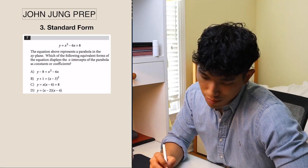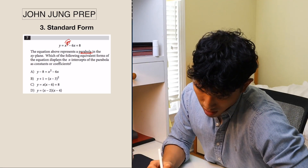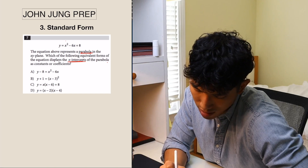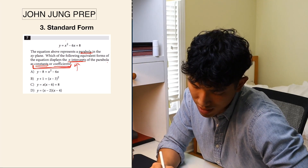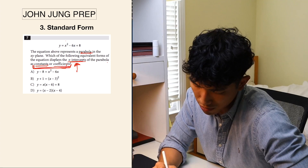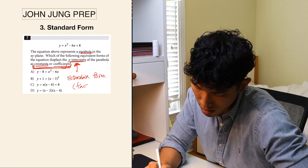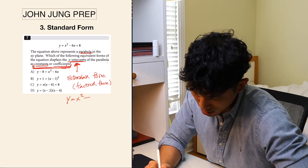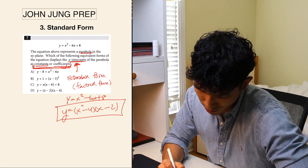The third type is similar but a little different. The equation above represents a parabola. Which of the following equivalent forms displays the x-intercepts of the parabola as constants or coefficients? Here we want to represent the x-intercepts as constants or coefficients. When a question asks for x-intercepts as constants or coefficients, you put it in standard form — also called factored form. Factoring x² − 6x + 8 gives (x − 4)(x − 2), so the answer is choice D.